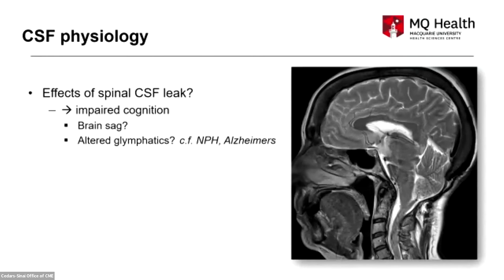In terms of impaired cognition and conscious state, it's easy to blame brain sag and that may be the main determinant. But it's possible that lowering CSF pressure is also changing glymphatic function in the brain — and there is a similar process suggested for normal pressure hydrocephalus and Alzheimer's disease, where perturbations of clearance of extracellular metabolites and proteins influence cognitive function. So I raise the possibility that this is also happening in spinal CSF leak.